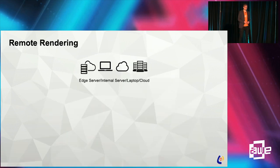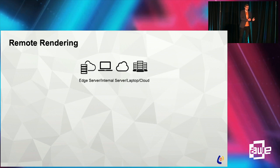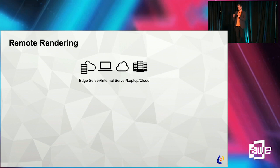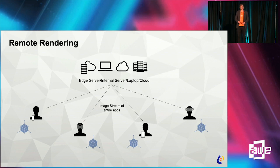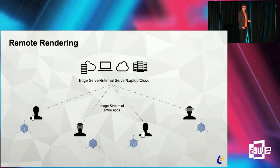We decided to work with remote rendering. If hardware is not powerful enough to display good AR content, why not use hardware that is able to do so? There are servers out there, there's the cloud, servers you can use. So we said: why don't we take this computing power, render everything there, and then stream it to all these devices — stream it to a smartphone, stream it to smart glasses? Then you're not limited to 800,000 polygons — you can do way more. You're dependent on the capabilities of your server, but that's a big advantage.